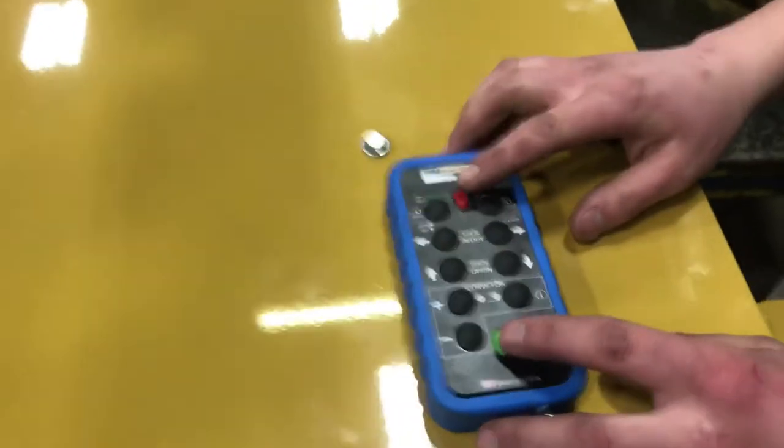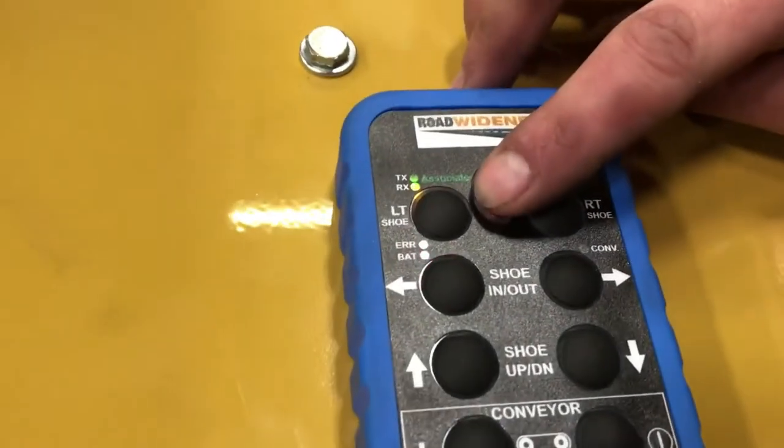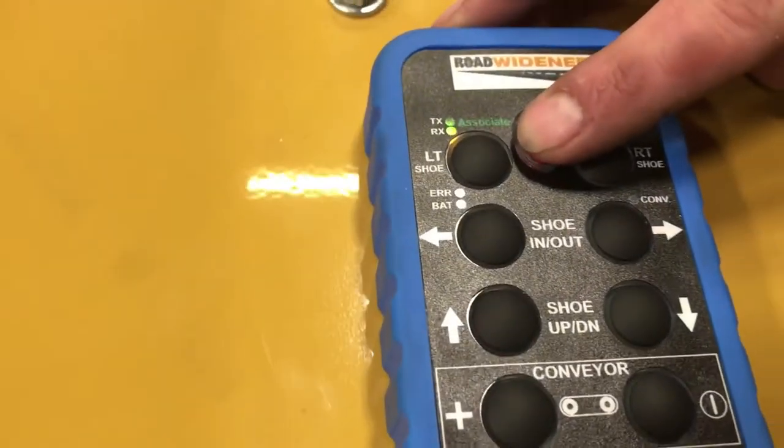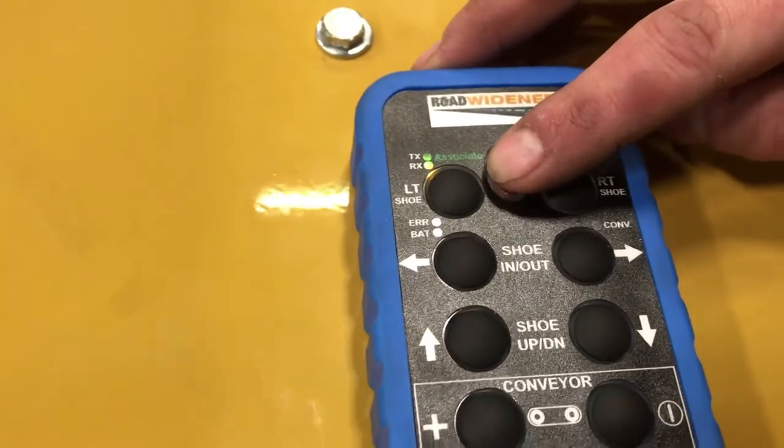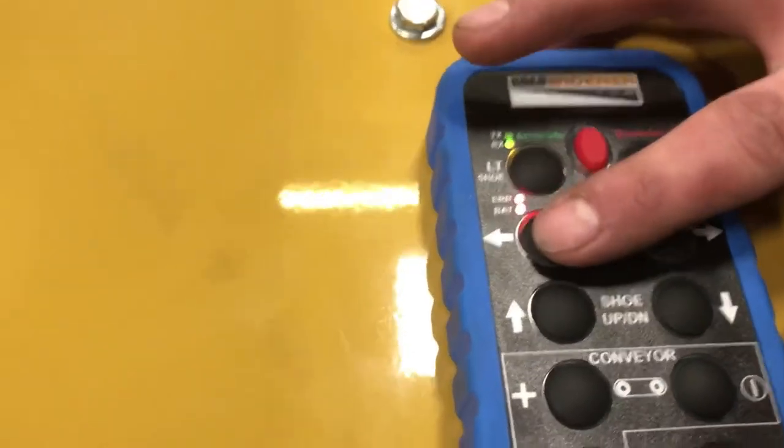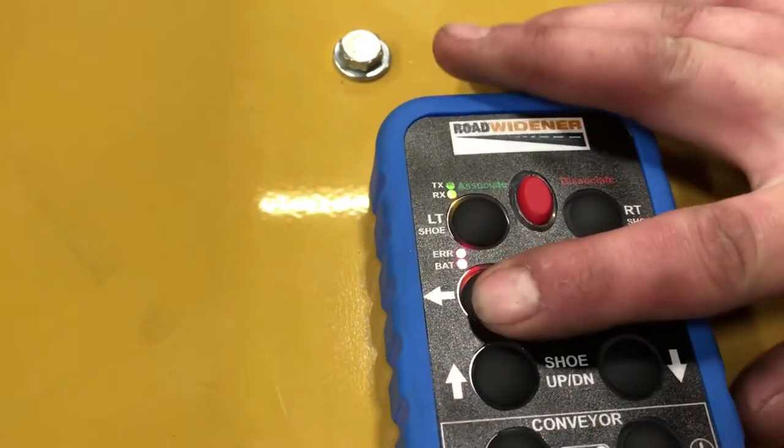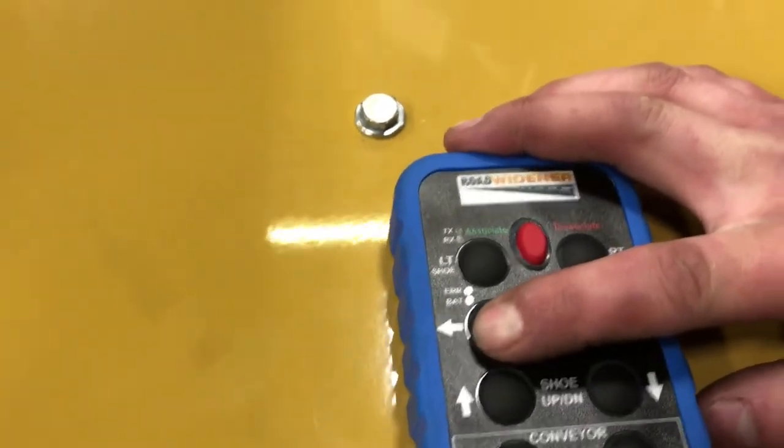Press and hold the red and green buttons. When the lights and battery indicator go off, you can release them. Now hold the left arrow button and power up the machine.